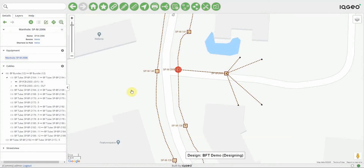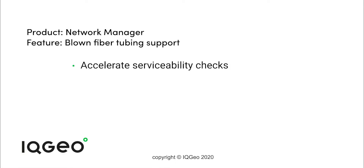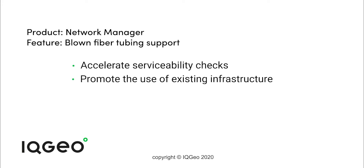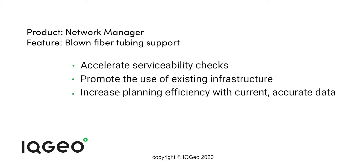That was a demonstration of blown fiber tubing support in Network Manager. By adding support for blown fiber tubing to Network Manager, service providers can accelerate serviceability checks, promote the use of existing infrastructure, and ensure that planners have the data they need to do their job effectively.